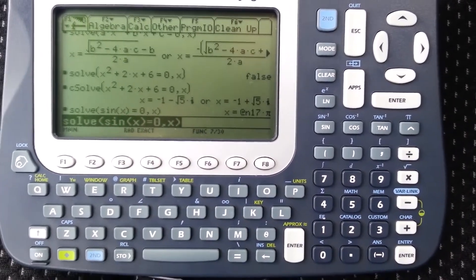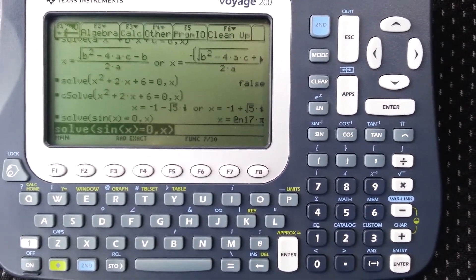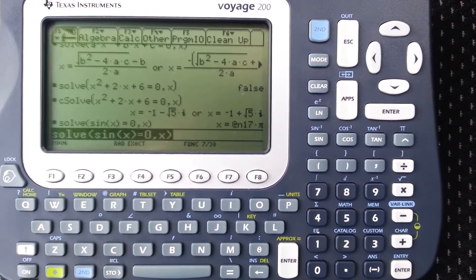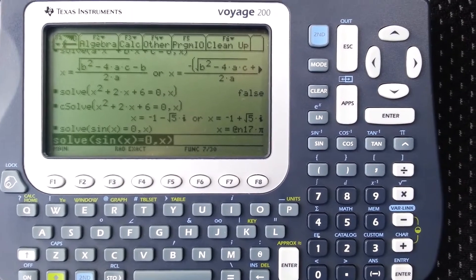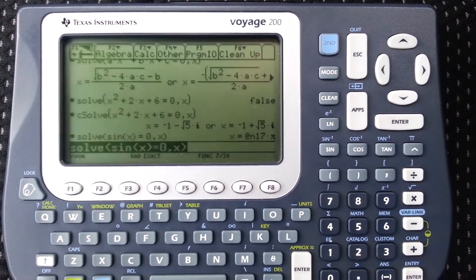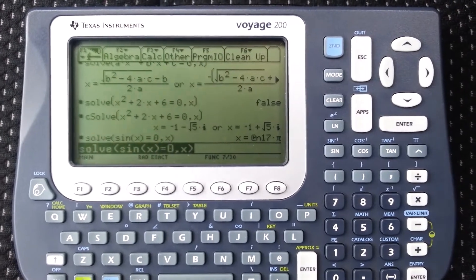And it'll say ampersand and some number times pi. That's the calculator's way of saying this is just the 17th generic constant, integer constant, that has been created on this calculator since last time it was reset.